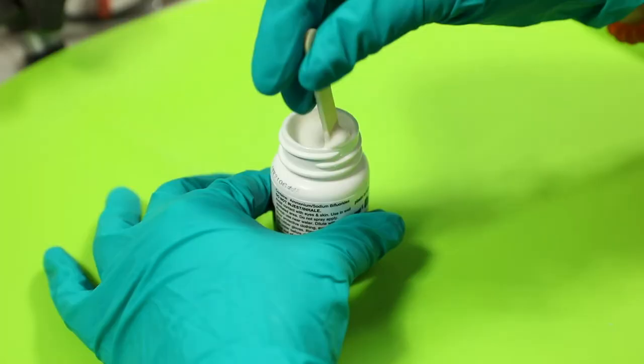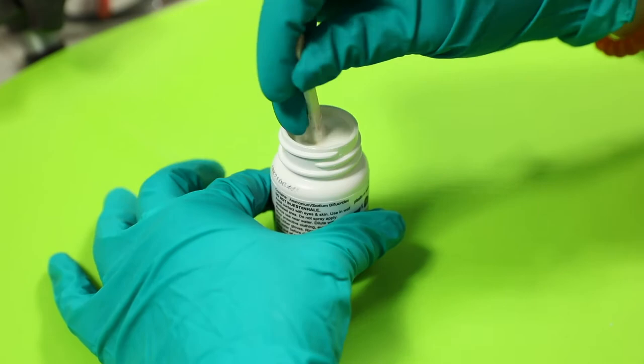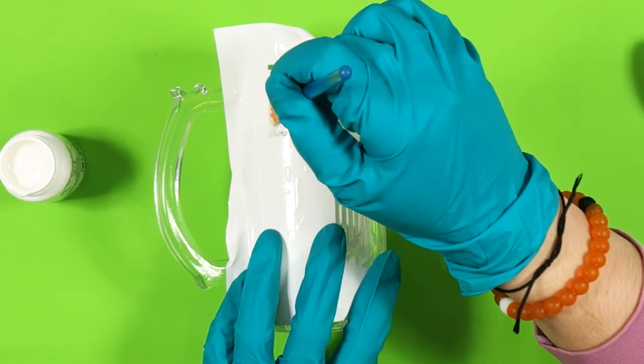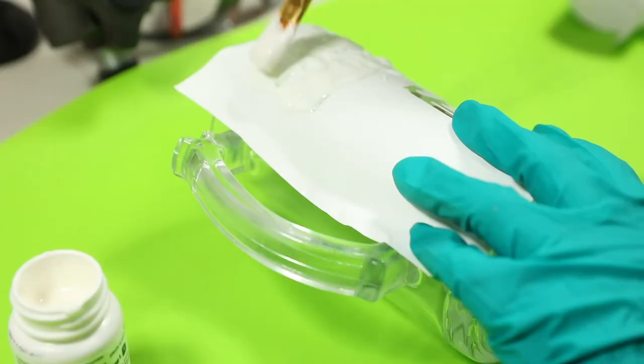Then, apply big and even globs of etching cream on top of the open areas of your stencil. Instead of brushing it on, I recommend dabbing it on. That makes it much easier to spread evenly without thinning it out.